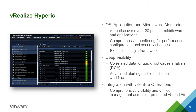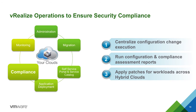vRealize Operations also includes Hyperic for OS middleware and app-level monitoring. It includes 75 out-of-the-box analytical packages to help you manage things like IIS, SQL Server, and so on. Combined with the vRealize Operations Management Pack, it provides deep insight into your hybrid cloud applications. The final component of vRealize Operations is its configuration management features — you can use this to deploy security patches in vCloud Air exactly the same way you do in your current on-premises vSphere environment.